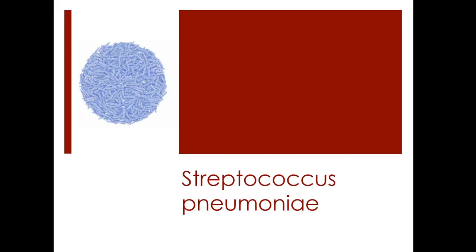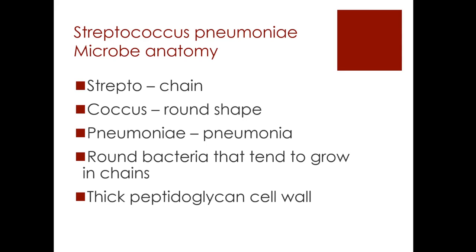Going through a bit of microbe anatomy: the term 'strepto' means chain and 'coccus' means round-shaped. As we discussed in the previous session on Staphylococcus aureus, 'coccus' means round-shaped there as well. But here we have 'strepto', meaning chain — streptococci tend to live in chains. 'Pneumoniae' refers to the fact that it's the most common cause of pneumonia. So it's round bacteria that tend to grow in chains and they have a thick peptidoglycan cell wall, and they take up purple dye when Gram-stained, very similar to Staphylococcus aureus.